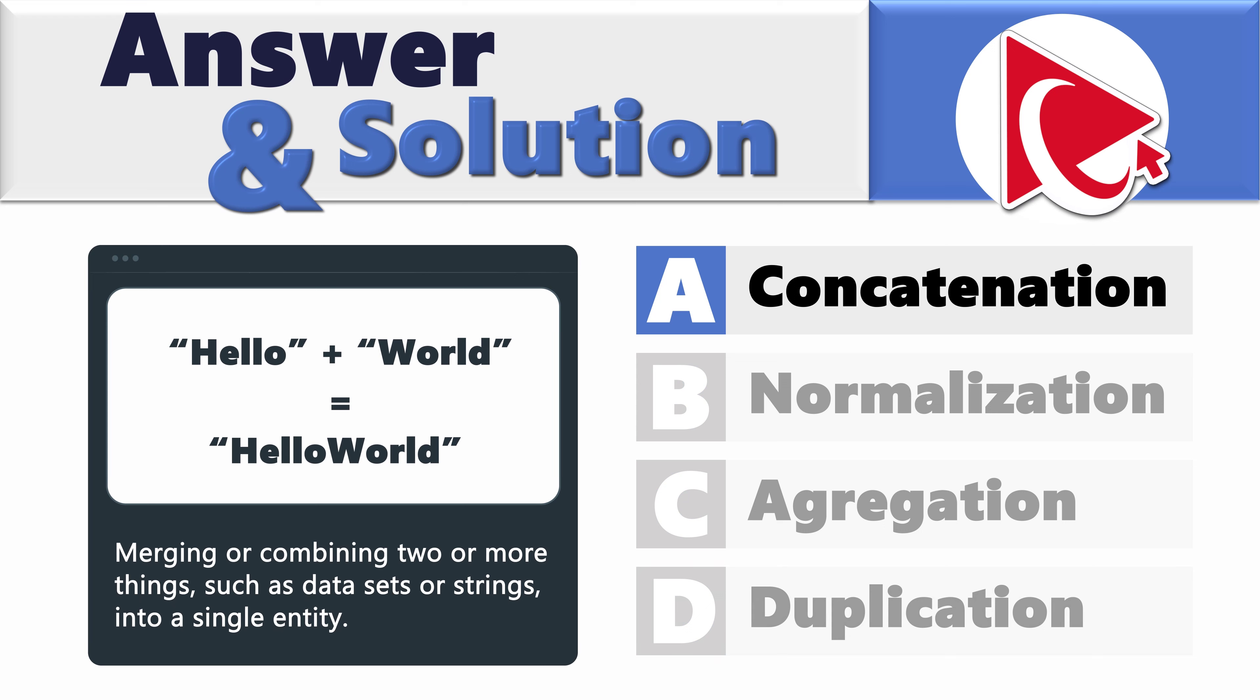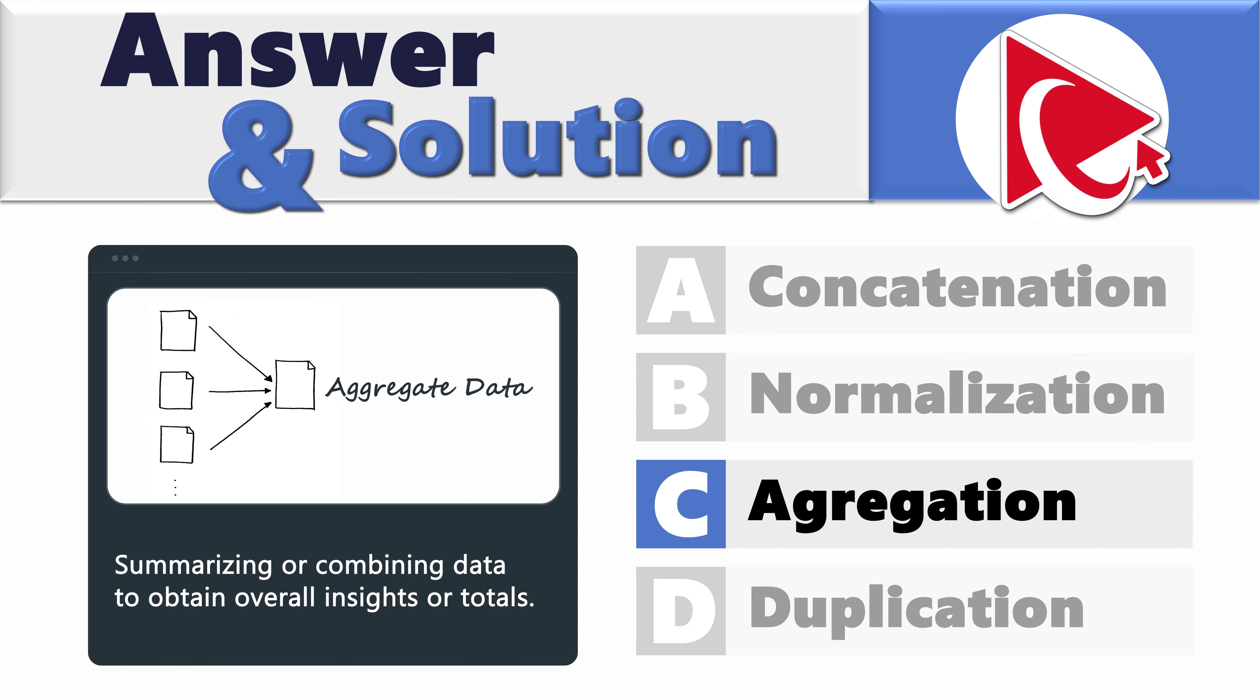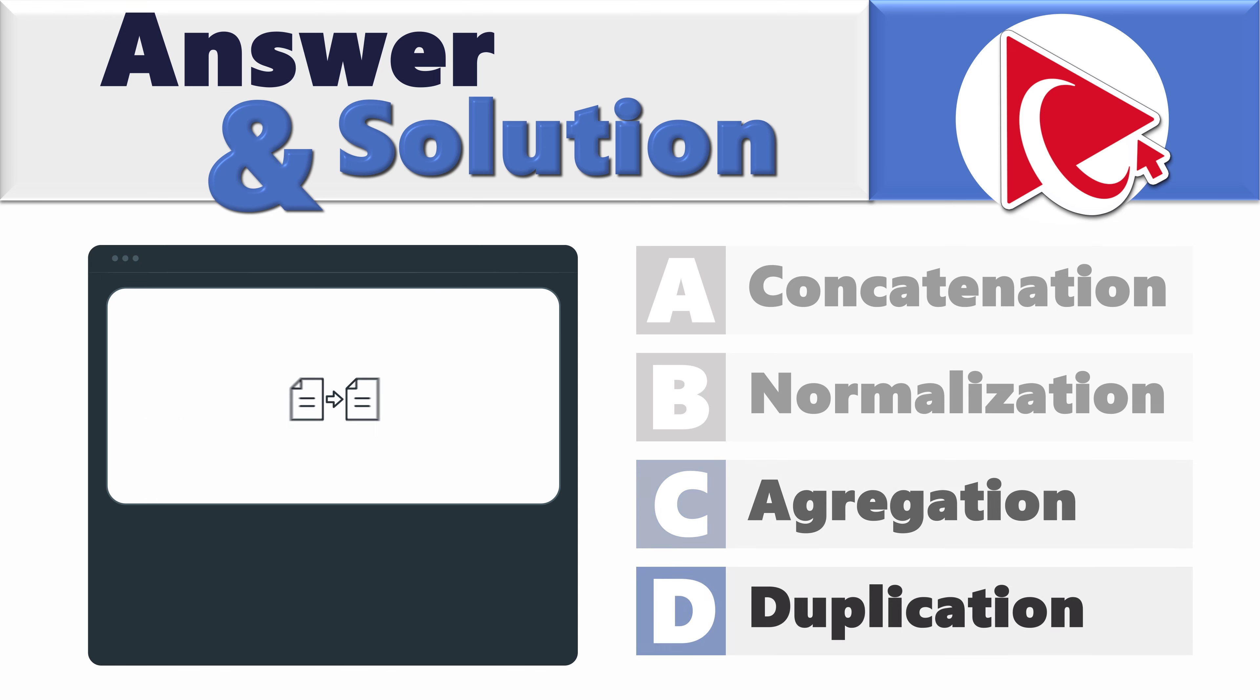Concatenation stands for merging or combining two or more things, such as datasets or strings, into a single entity. Normalization is adjusting and scaling data to a standard format or range for consistent analysis. Aggregation is summarizing or combining data to obtain overall insights or totals. And last but not least, duplication is creating identical copies of data or records within a dataset.